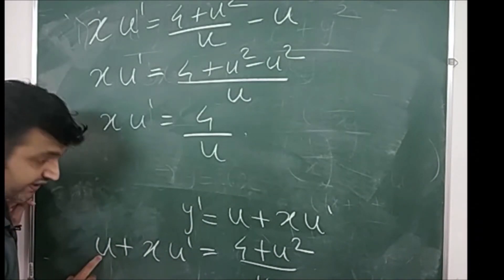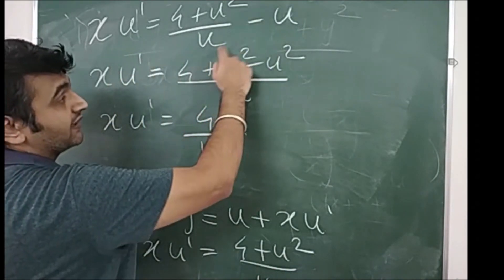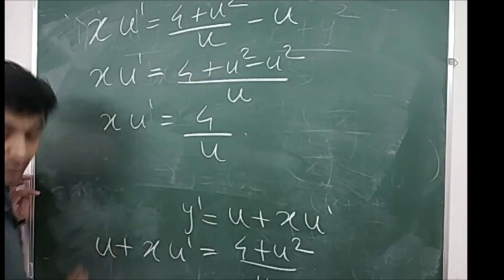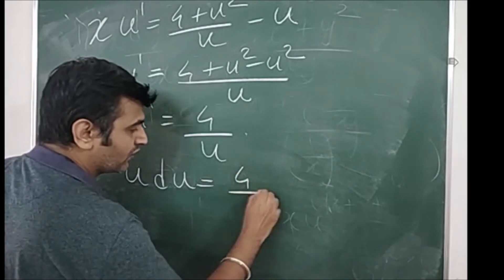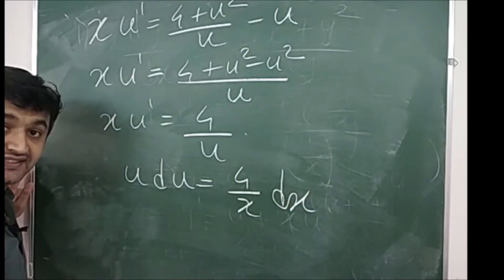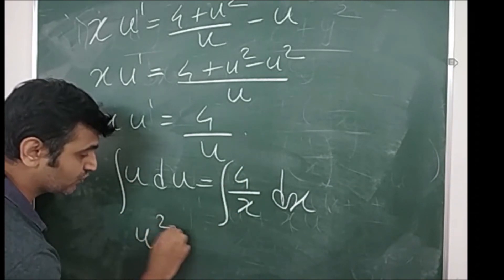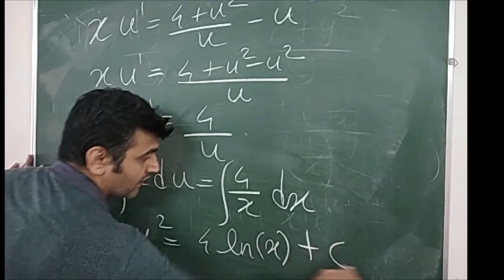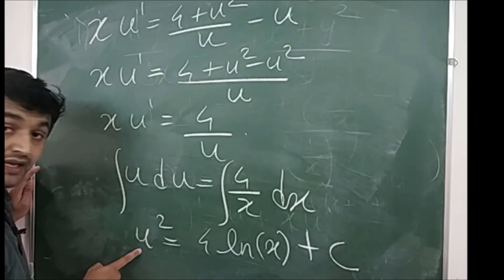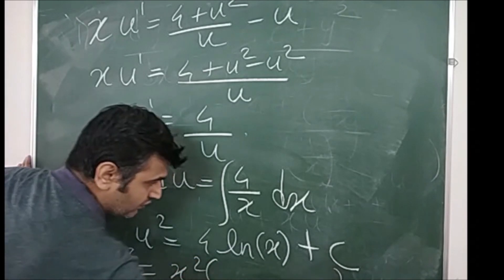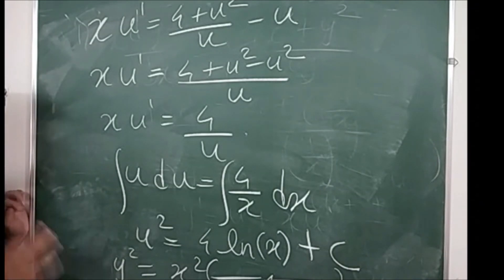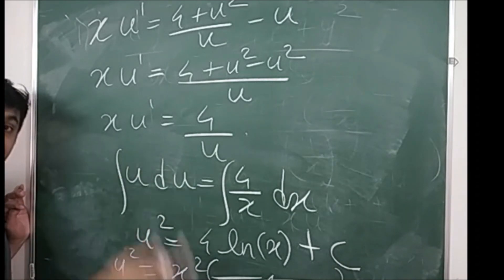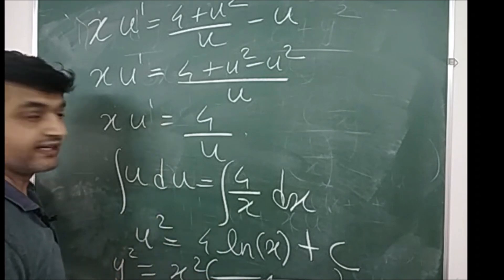Rearranging, bring u to the right hand side, and after cross multiplication you get x·du/dx = 4/u, which is much easier to solve. This gives u·du = 4/x·dx — variable separable. Integrating both sides: u²/2 = 4·ln(x) + c, so u² = 4·ln(x) + c. Replace u with y/x to get y²/x² = 4·ln(x) + c, and therefore y² = x²(4·ln(x) + c) is the solution. That's how you solve a homogeneous differential equation by reduction to variable separable.